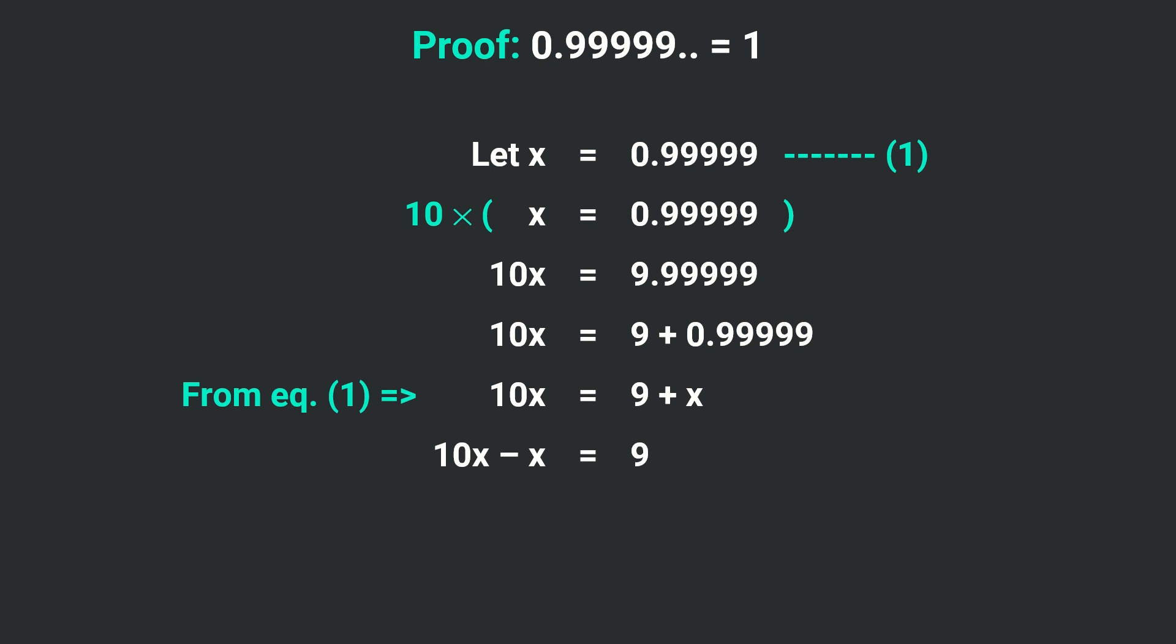Now 10x minus x will be equal to 9x equals 9. Dividing both sides by 9, x is equals to 1. In this way, x which was previously equal to 0.99999 is now equal to 1. Hence proved that 0.99999 is equal to 1.